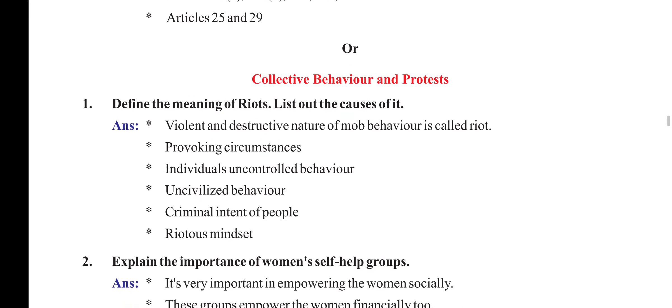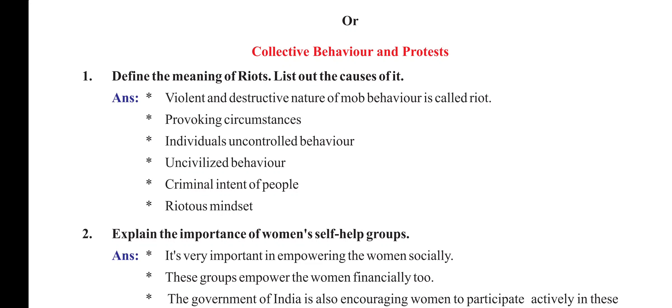The chapter on collective behavior and protests. Define the meaning of riots and list out the causes. Violent and destructive nature of mob behavior is called a riot. Causes include: provoking circumstances, individuals' uncontrolled behavior, uncivilized behavior, criminal intent of people, and riotous mindset.